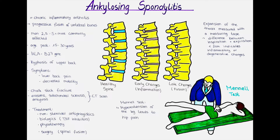Ankylosing spondylitis is a form of spondyloarthritis. Spondyloarthritis is a group of inflammatory conditions that also includes psoriatic arthritis and reactive arthritis. The exact cause of ankylosing spondylitis is unknown, but genetic factors play a significant role.